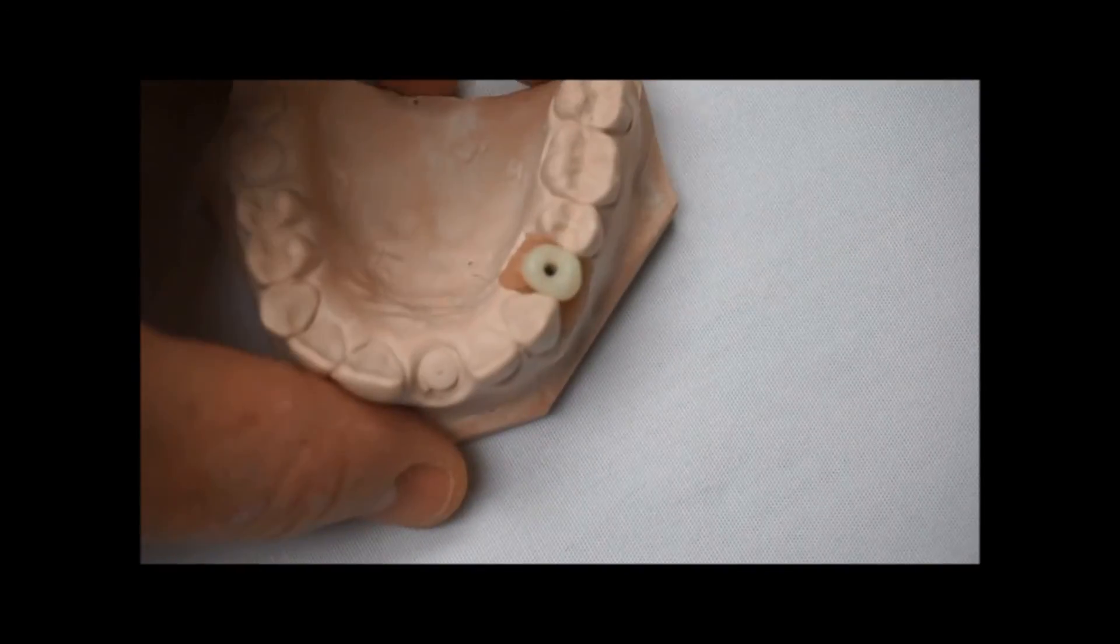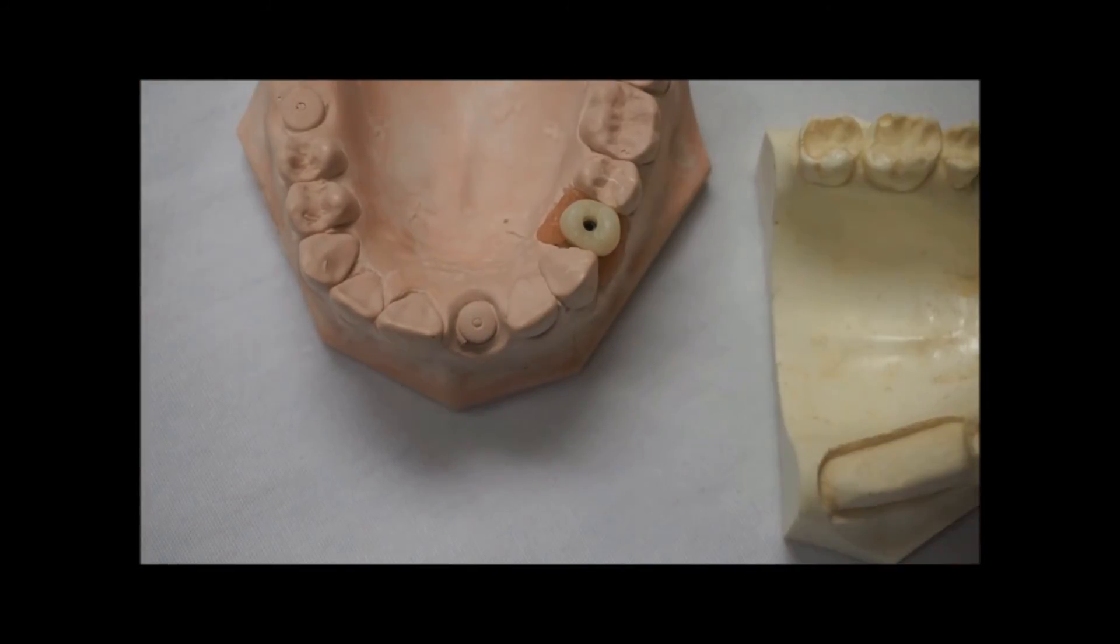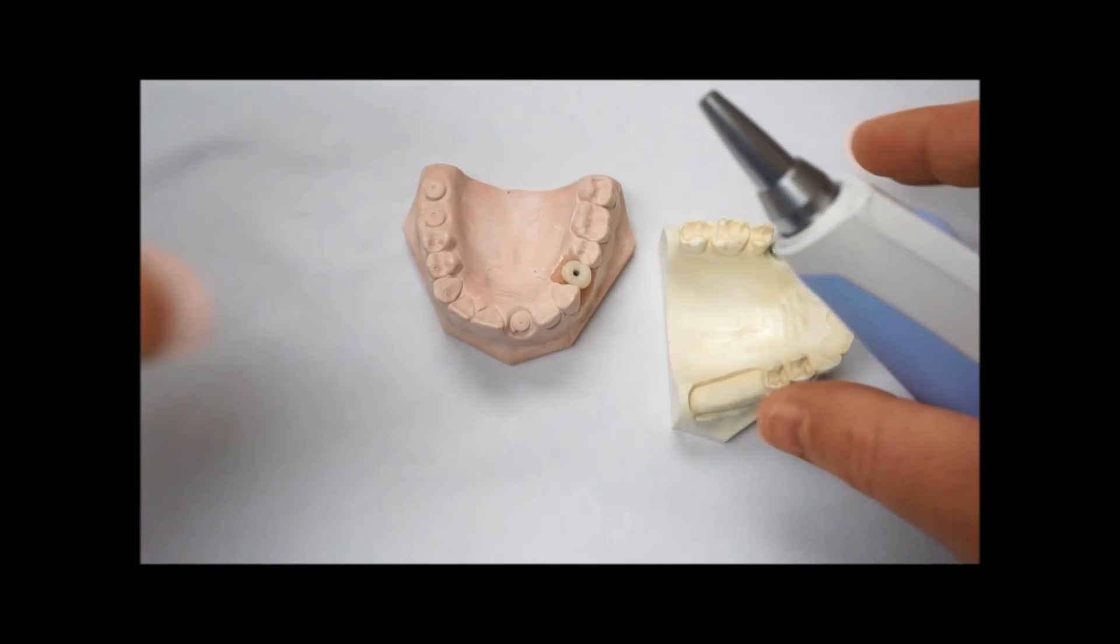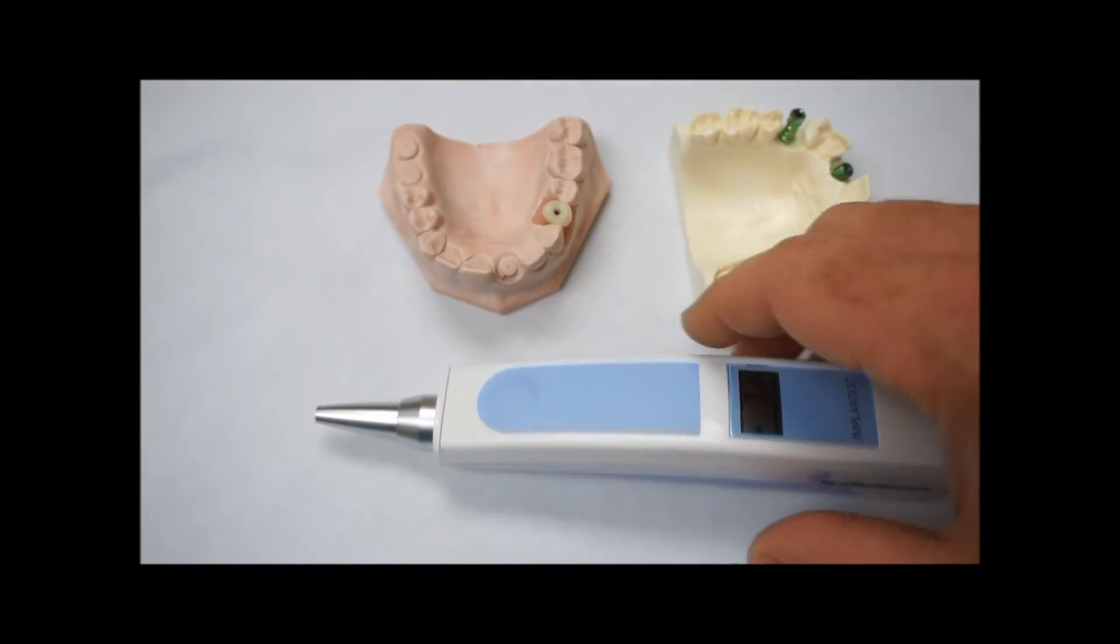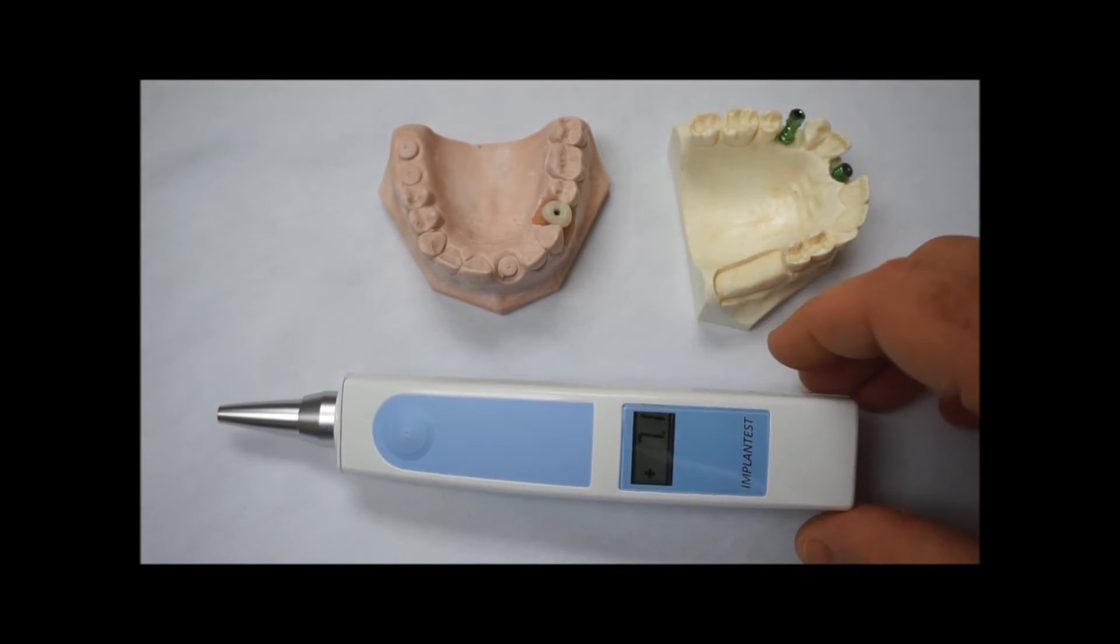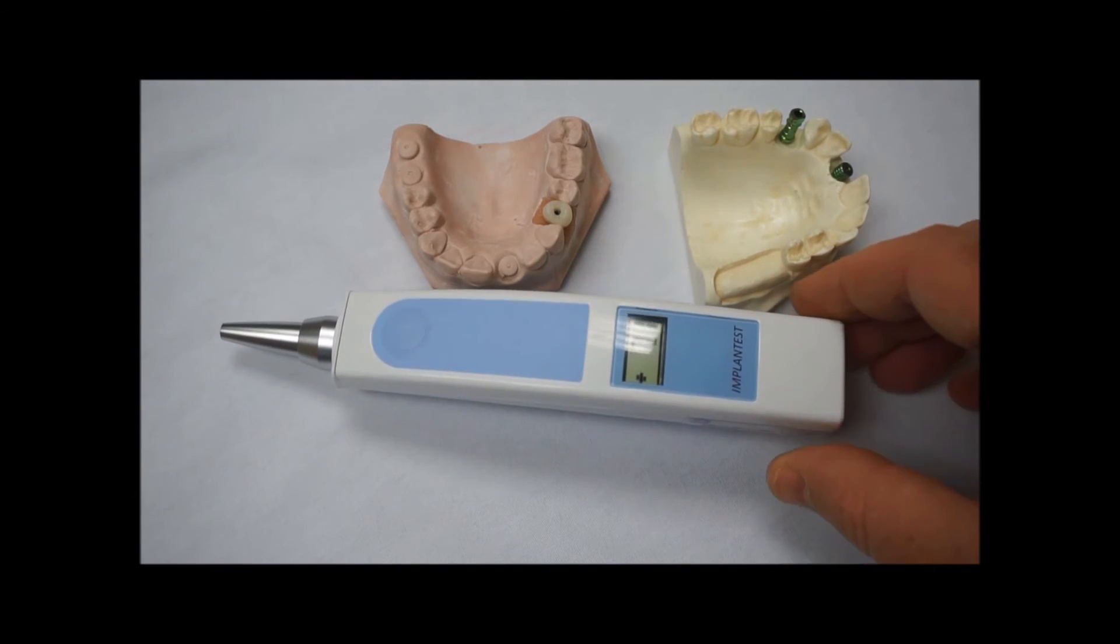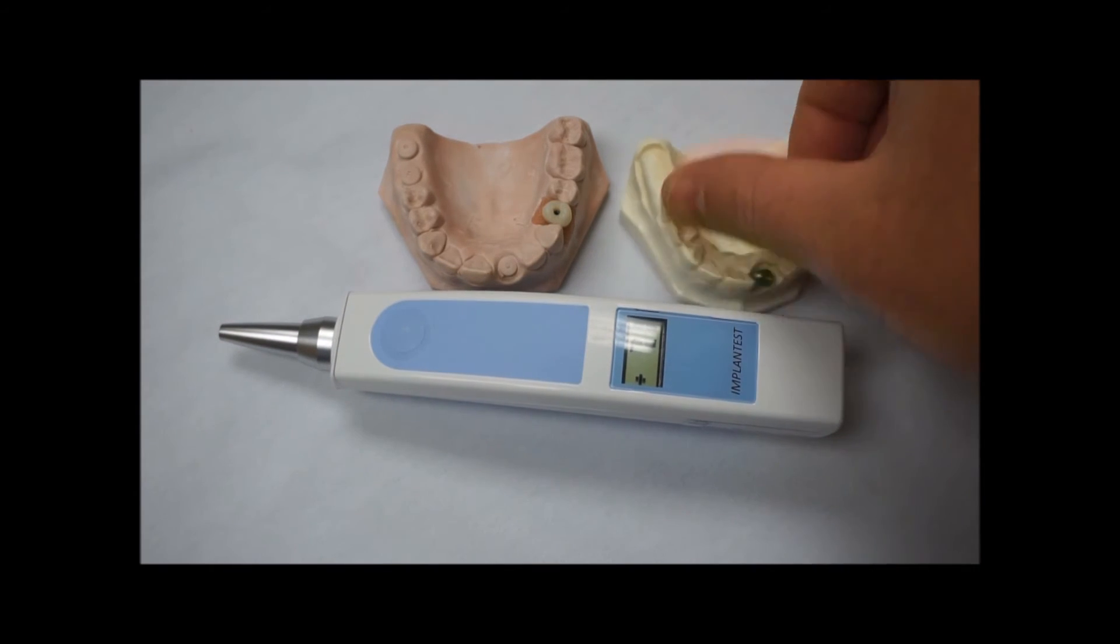As you can see, you get different readings based on the stability of what you're testing. Now, what do you make of those readings? Well, the scale that you would go by is from 7 to 10, you can be very confident that that implant is stable, that it's probably okay to go ahead and load.